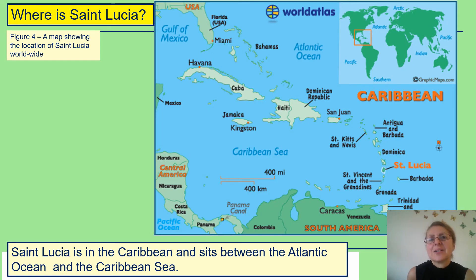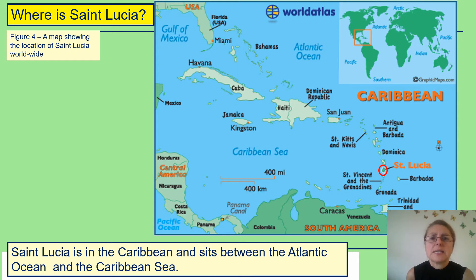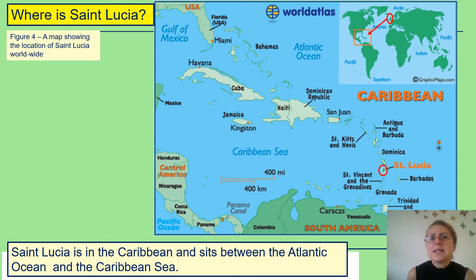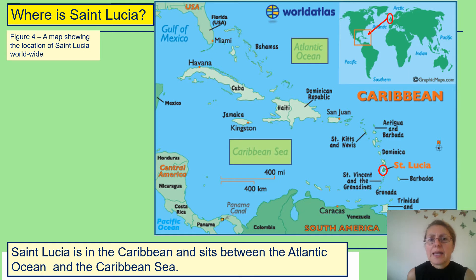In today's lesson, we will be looking at tourism in a particular place — Saint Lucia. Saint Lucia is located in figure four, which gives us an idea of where it is in the world. Here is the UK, and we can see that Saint Lucia is across the Atlantic, placed in the Caribbean. Saint Lucia is a tiny Caribbean island between the Atlantic Ocean and the Caribbean Sea.